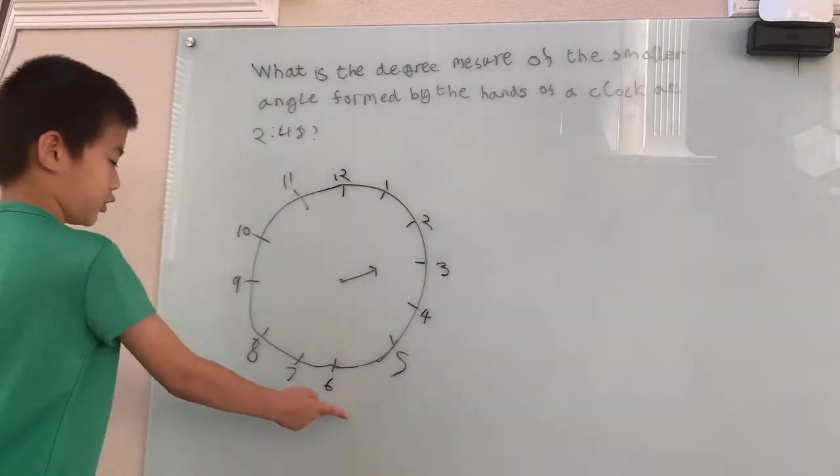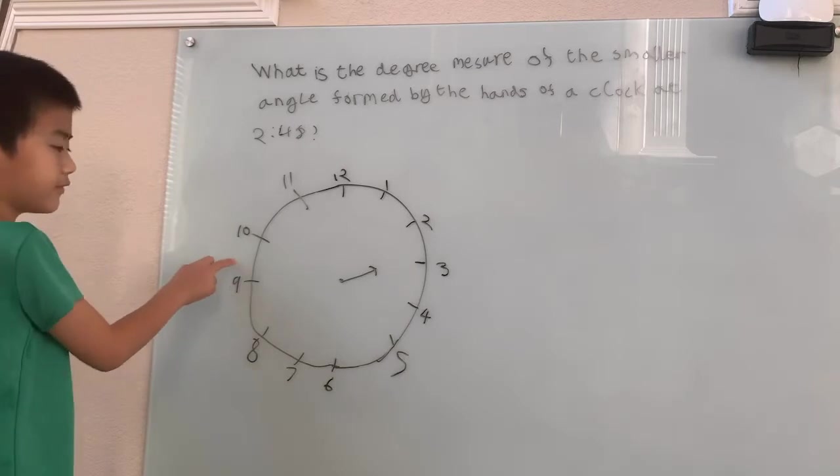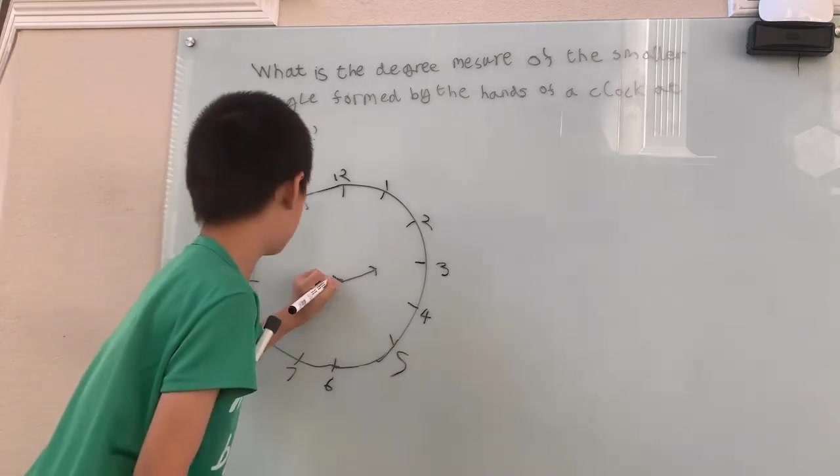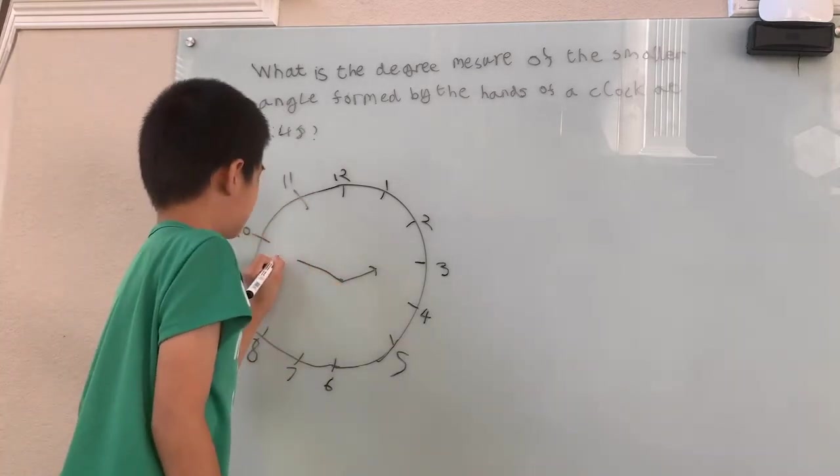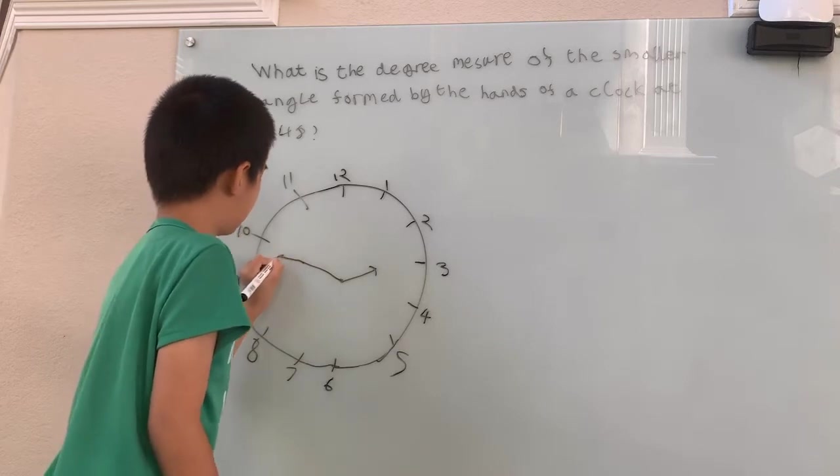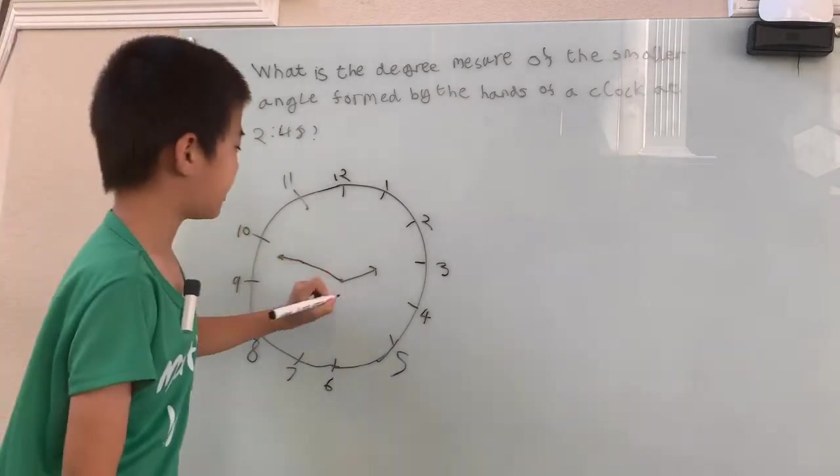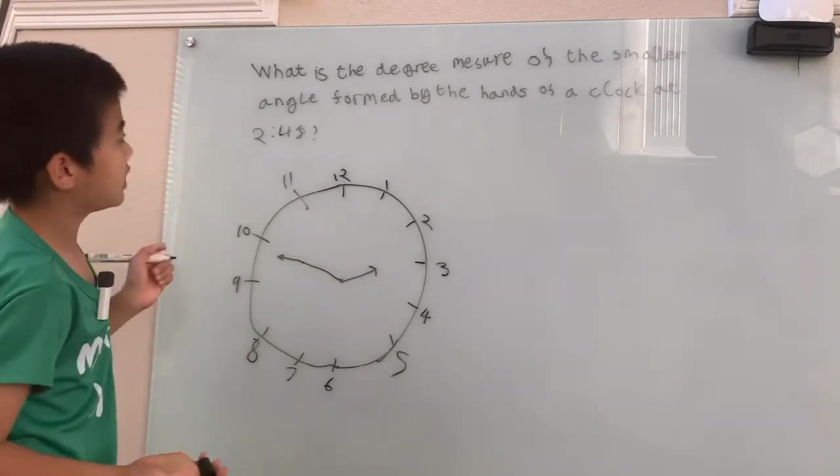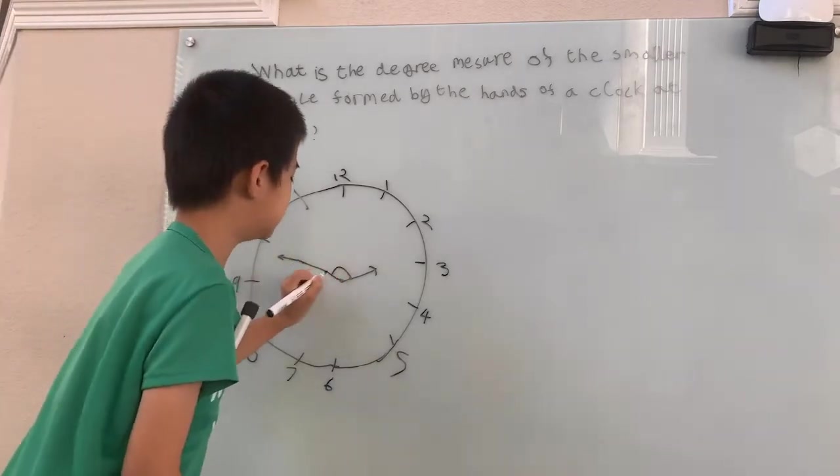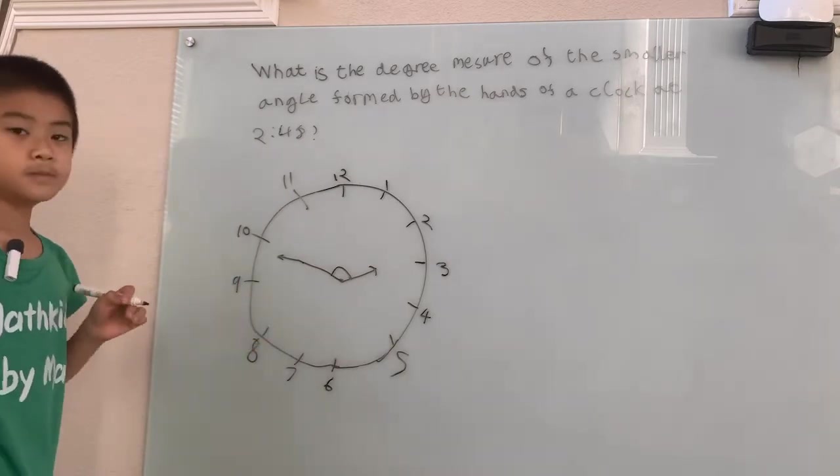And 48, that's 30, 35, 40, 45, somewhere almost to the 10. The minute hand is going to be pointing right over there. So there's 2:48, they want this smaller angle, that means this is the smaller angle.